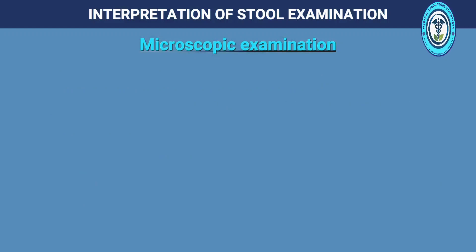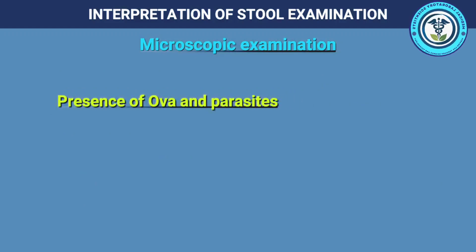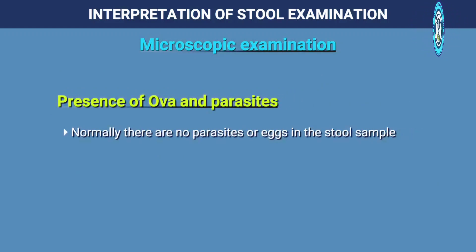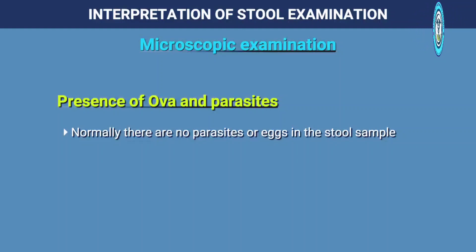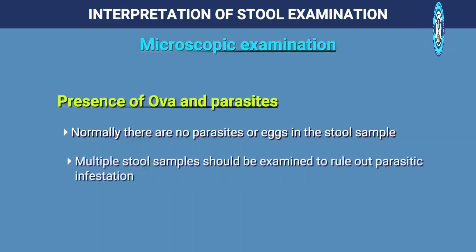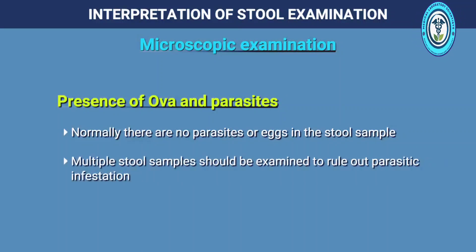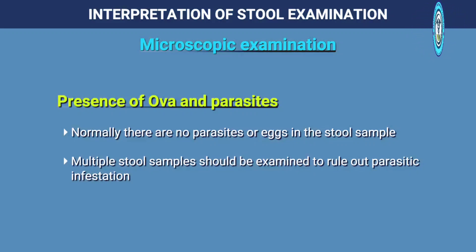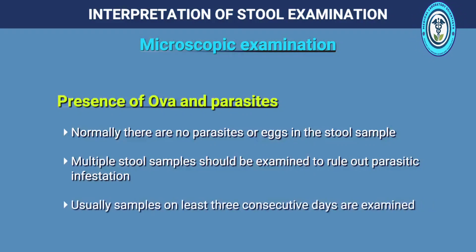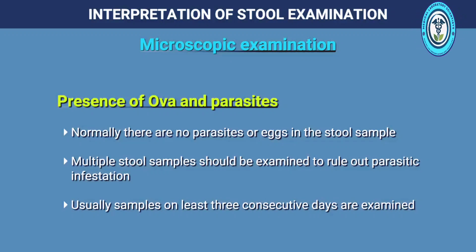Microscopic examination for ova and parasites: normally there are no parasites or eggs in the stool sample. Multiple stool samples should be examined to rule out parasitic infestation; usually samples on at least 3 consecutive days are examined.